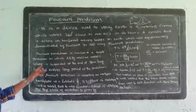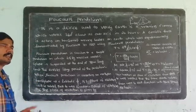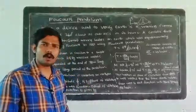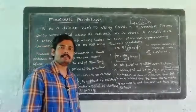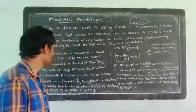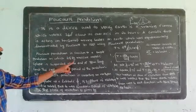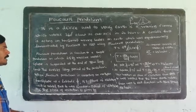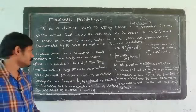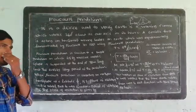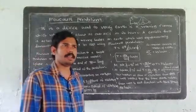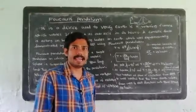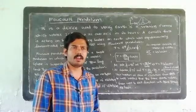In the original Foucault pendulum, a 28-kilogram massive metallic sphere is suspended at the end of a 70-meter long cord. This pendulum length of 70 meters gives it a very large time period of oscillation — it is a long ideal cord.